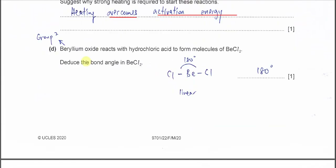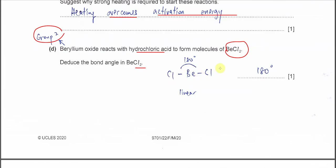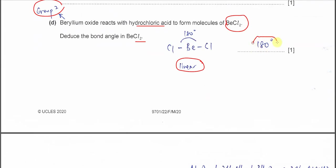Part D: given that beryllium oxide reacts with HCl to form BeCl₂, deduce the bond angle of BeCl₂. Beryllium is Group 2, so it has 2 valence electrons. These two valence electrons are shared with two chlorine atoms forming the molecule. Beryllium is the central atom with two bonding pairs, which have maximum repulsion giving a bond angle of 180°. The geometry or shape is linear. The answer is 180 degrees.